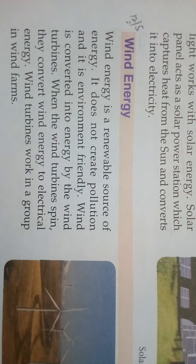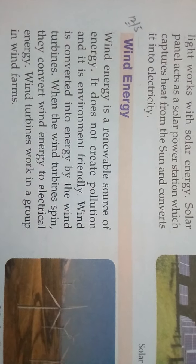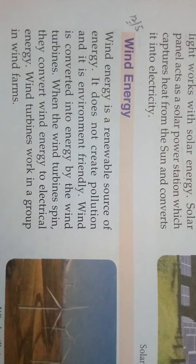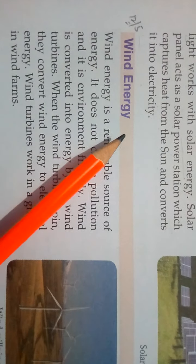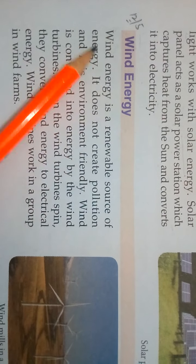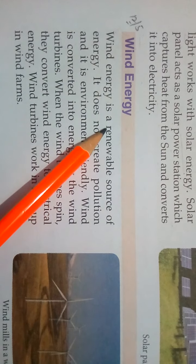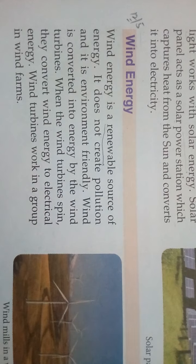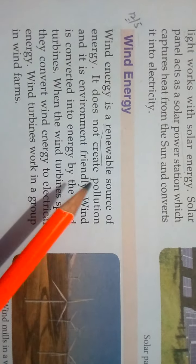Hi everyone. We were discussing types of energy. In the previous video we discussed mechanical energy and solar energy. The next type of energy is wind energy. Wind energy is a renewable source of energy — renewable means it can be used again and again. It does not create pollution.